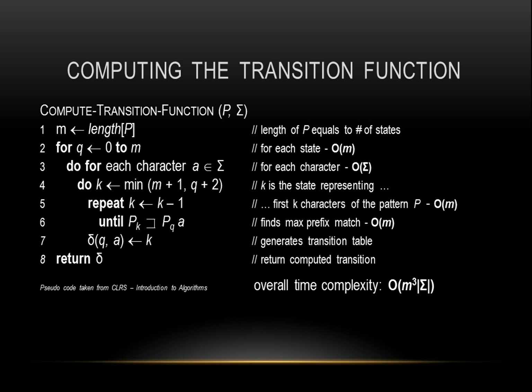Line 7 generates the transition function delta for state k, while the final line, line 8, returns the computed function delta. The time complexity analysis of the function is on screen.